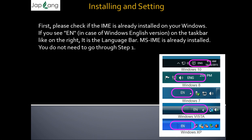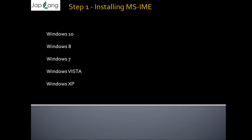For installing and setting up the Input Method Editor: if IME is already installed on Windows, click on the right-hand bottom side of the taskbar. If you see 'EN' in the language bar on the right, MS IME is already installed and you don't need to follow step one. If you cannot see 'EN' on the right bottom, then you need to follow step one. We'll be covering installation on Windows 10, 8, 7, Vista, and XP, and also Mac.